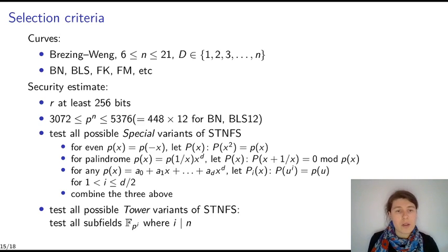Actually, it was interesting. It does not apply to BN and BLS curve, but it applies to many other Brezing-Weng curves. The second step was to test all possible variants of the tower. So we test all subfields of FP to the n. So for example, if we have n equals to 12, then we will test FP, FP2, FP3, FP4, FP6, and FP12 as subfields. So in this work, we wrote a script to do all of these variants.